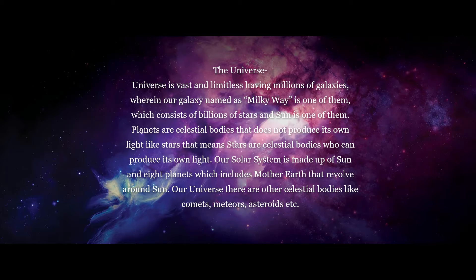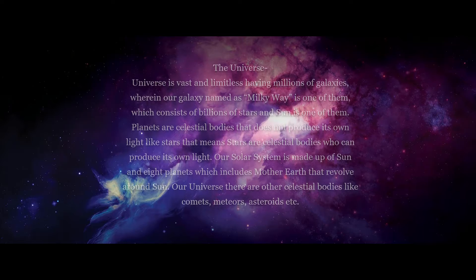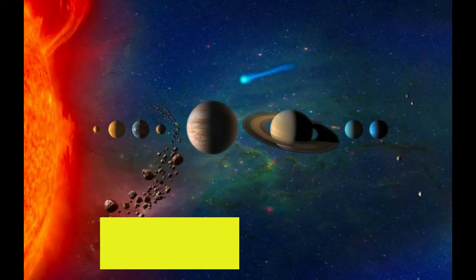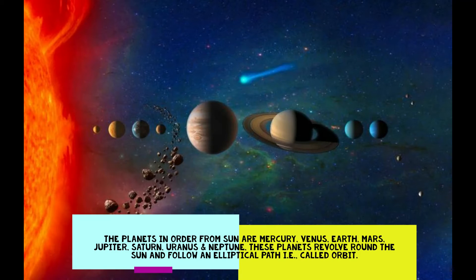Planets are celestial bodies that do not produce their own light like stars. That means stars are celestial bodies that can produce their own light. Our solar system is made up of the sun and eight planets, which includes Mother Earth that revolves around the sun.